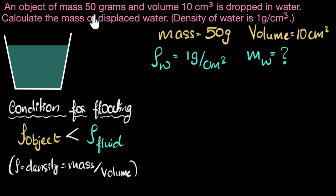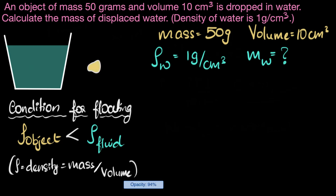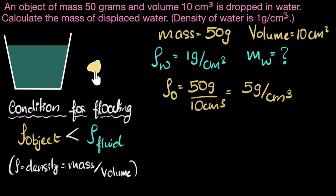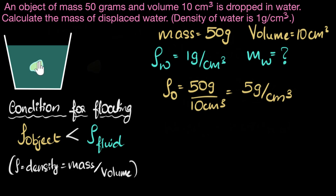Here's the second problem. The only difference is that the mass and volume of the stone have changed — everything else is the same. It's dropped in water and we need to calculate the mass of the displaced water. Since the mass and volume of the stone have changed, we have a different stone altogether. If we calculate its density, this time we get 50 grams divided by 10 cm cubed, which is 5 grams per cm cubed. This means the object has a larger density than water — it's denser than water — so the object will sink and displace that amount of water.